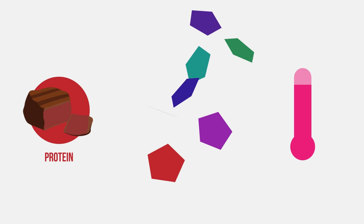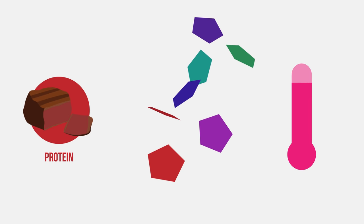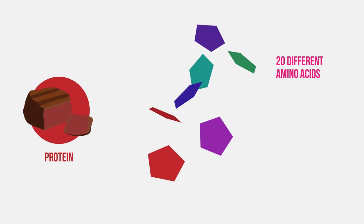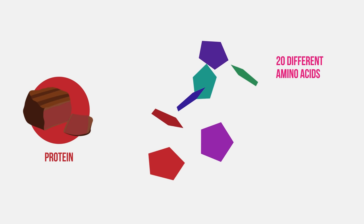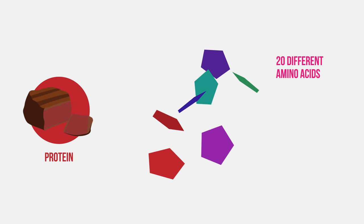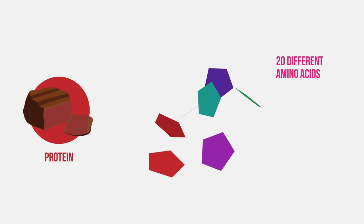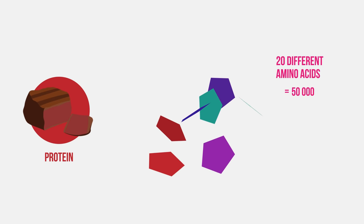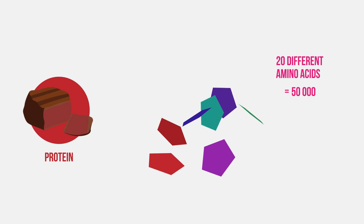There are 20 different amino acids that make up proteins. The order of amino acids varies in different proteins, and so 20 different amino acids means an almost infinite number of different proteins can be made. It is estimated there are about 50,000 different proteins in the human body alone.